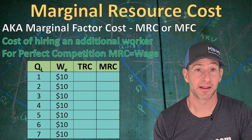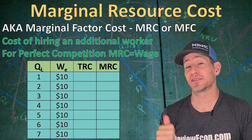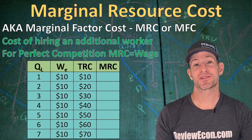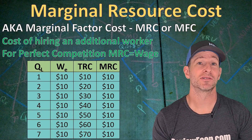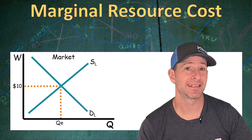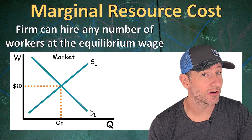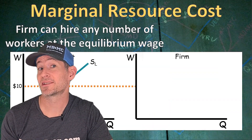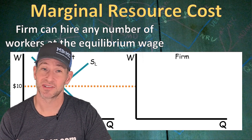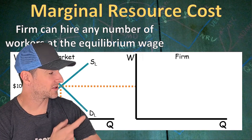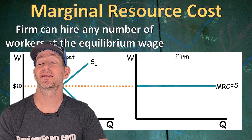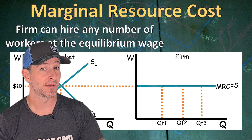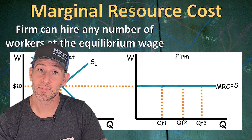Let's take a look at the numbers. Here we have the different quantities of labor a firm can hire, and we see that the wage is $10 for every unit of labor. The total resource cost increases by $10 with each additional worker, and as a result, the marginal resource cost — which is the change in total cost — is going to be equal to the wage. So here's that market graph: the equilibrium wage for labor is $10, and this firm can hire as many workers as it wants at that equilibrium wage. That $10 wage moves over to the firm graph and creates the marginal resource cost, which is the supply of labor for the firm. It's perfectly elastic because the firm can hire any quantity of labor at the equilibrium wage, and that marginal resource cost comes from the equilibrium wage from the market.